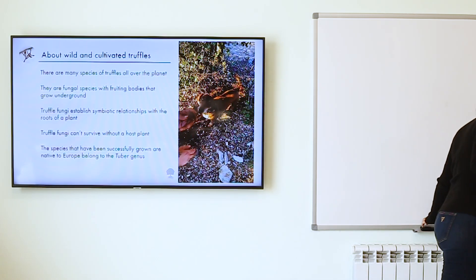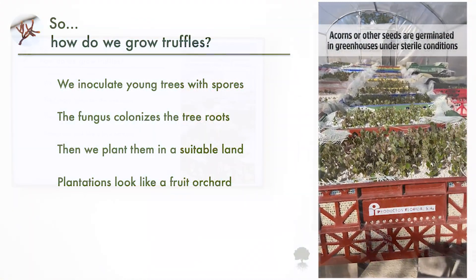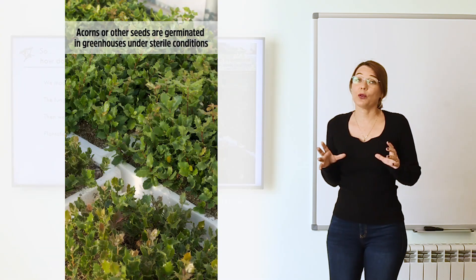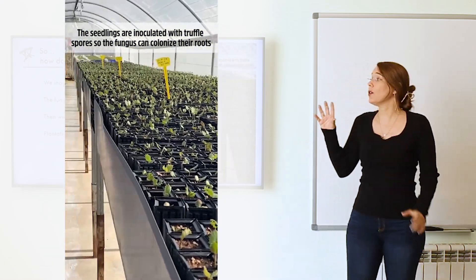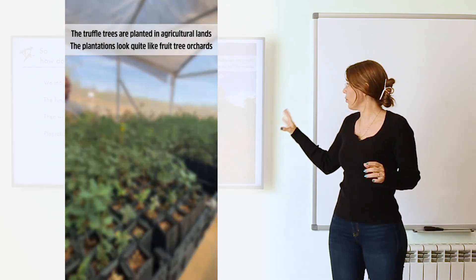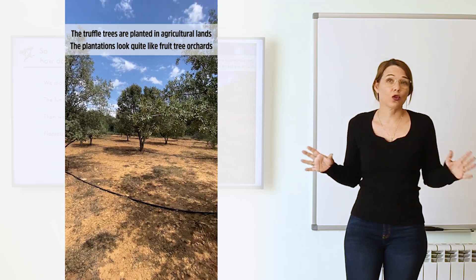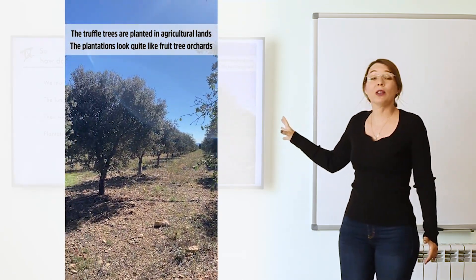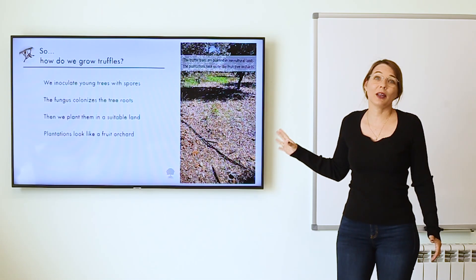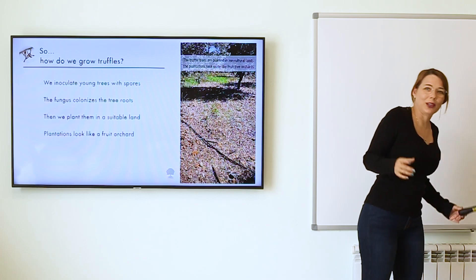To cultivate truffles, the first thing you have to do is get trees or bushes that have the truffle in the roots. We inoculate young trees with spores — we put spores in contact with the roots of young trees — and then we establish a plantation that looks like a fruit tree orchard. We take care of it in ways that are not exactly the same as other orchards, but more or less similar, with some special differences I will tell you about later.